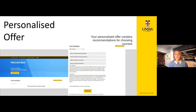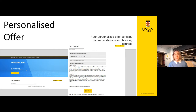This offer is really useful because it contains recommendations for choosing courses in your first year based on your programme and the major you want to undertake. For example, for the Bachelor of Science, based on the Biology major the student is looking to declare, the recommended courses for their first year are BIOS 1101, Math 1041, and so on. This student will be able to work from this information to create an enrolment plan based on which term each course is offered and the course requirements.